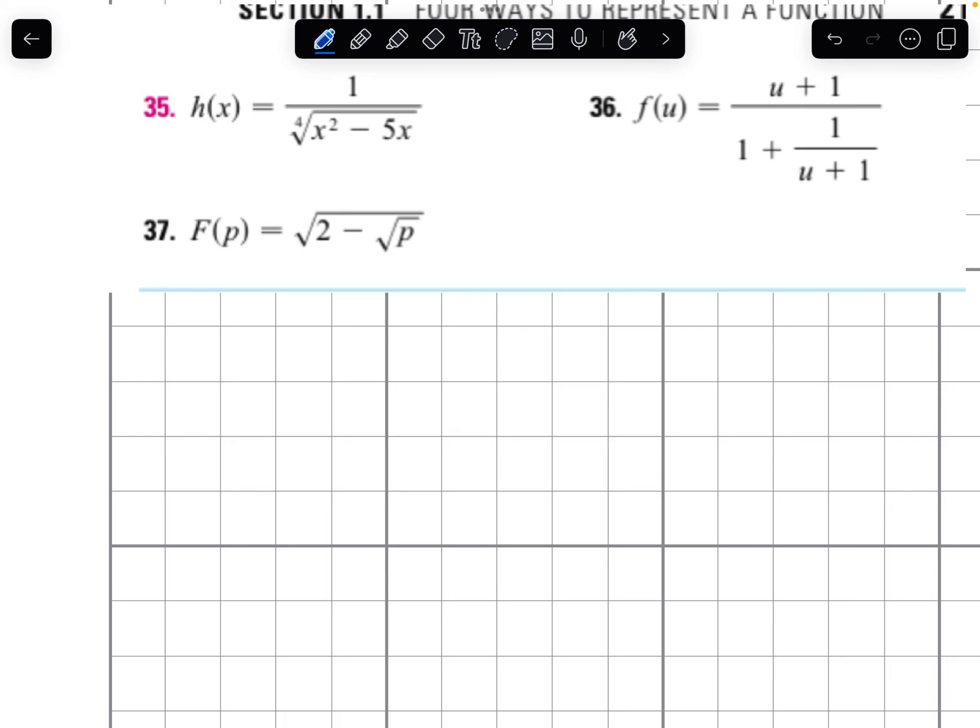Let's look at 35. The domain is going to be where there's a 1 over 0 error or a square root of a, or a quarter root of a negative. So even powers don't accept negative inputs in real values.